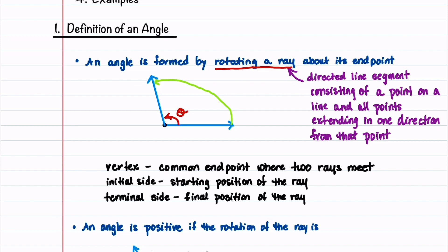We'll name the angle formed by this rotation theta. The vertex of the angle is a common endpoint where two rays meet. Let's go ahead and label that. This is the vertex.